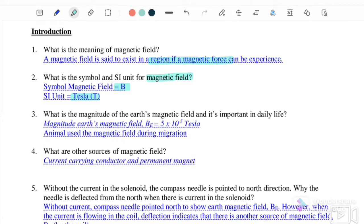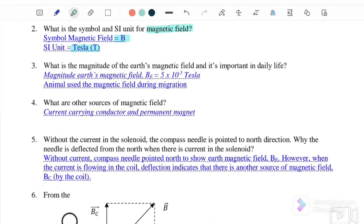Number three: What is the magnitude of the Earth's magnetic field and is it important in daily life? The magnitude of the Earth's magnetic field B_E is 5 × 10^-5 Tesla, and animals use the magnetic field during migration. This is the importance in daily life.